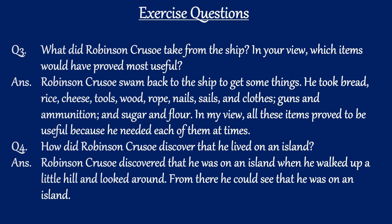Question three: What did Robinson Crusoe take from the ship? In your view, which item would have proved most useful? Answer: Robinson Crusoe swam back to the ship to get some things. He took bread, rice, cheese, tools, wood, rope, nails, sails, cloths, guns, ammunition, sugar, and flour. In my view, all these things proved to be useful because he needed each of them at times.